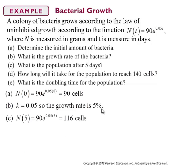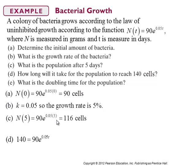Part C: what is the population after 5 days? Evaluate the function with t = 5. You plug in 5 for t, getting 0.05 × 5 = 0.25. Then 90 × e^(0.25) works out to about 116 cells — you can calculate this with your calculator, rounding to the nearest integer since it doesn't make sense to have a fractional number of cells.